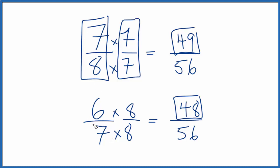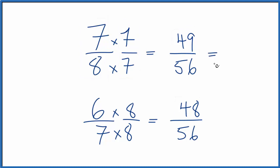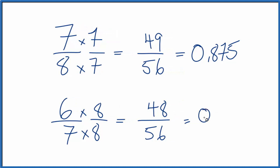We could also convert these fractions to decimals and compare. So 49 divided by 56, that's 0.875. 48 divided by 56, that's 0.857. And we'll just leave it here because we can see that 0.875 is larger than 0.857.